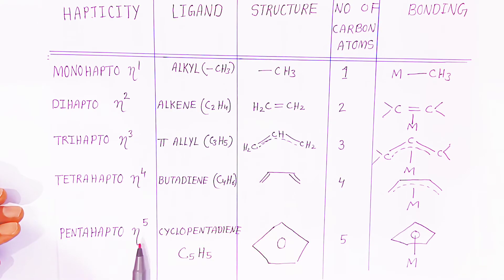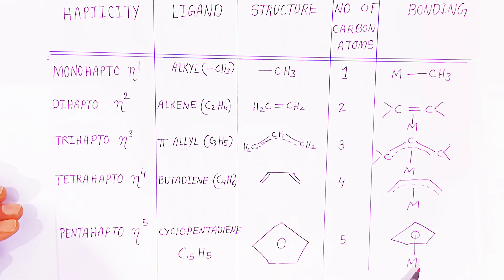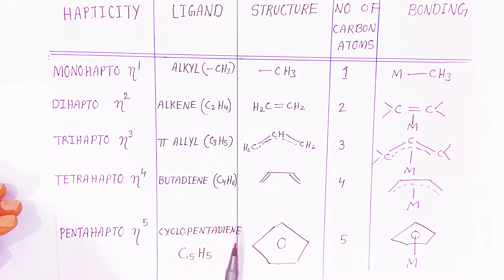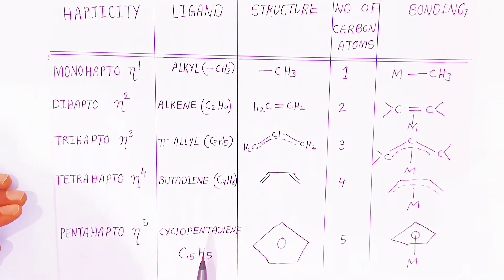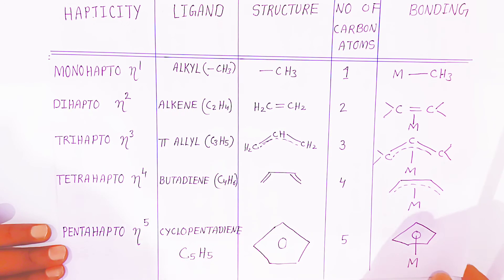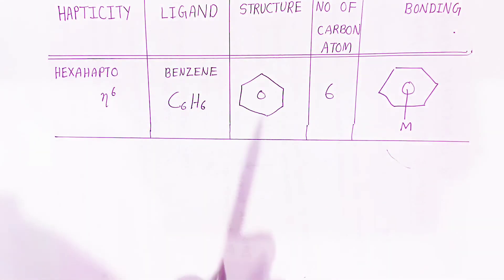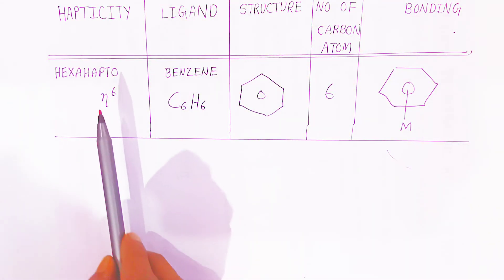The fifth type is the penta hapto ligand. It is called penta hapto because the number of carbon atoms bonded to the metal is five. The well-known example is cyclopentadiene, with formula C₅H₅. These examples are very important for the examination.